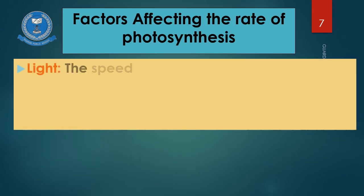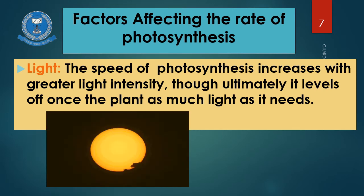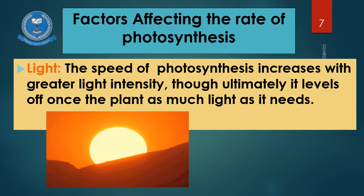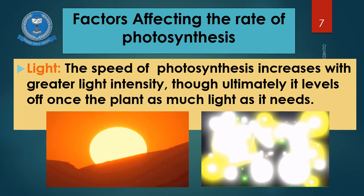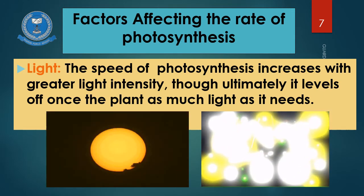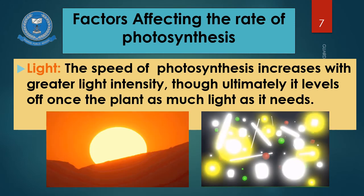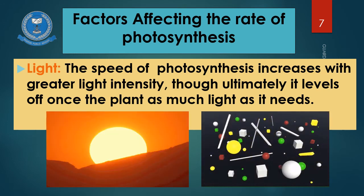Light. The speed of photosynthesis increases with greater light intensity, though ultimately it levels off once the plant has as much light as it needs. Light is one of the most important factors for photosynthesis, kyunki process ka naam hi light ki base pe rakha gaya hai. To agar light intensity badhti hai, to photosynthesis ka rate bhi speed up ho jaayega. Lekin agar plant apni need se zyada light absorb kar le, to aise point pe photosynthesis ka rate increase nahi hoga. Plants photosynthesize faster on a sunny day than on a cloudy day, and plants growing in an open meadow photosynthesize faster than the same kinds of plants growing in shady places.